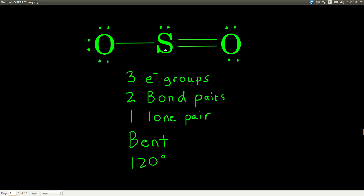For sulfur dioxide, there are three electron groups: two are bond pairs and one is a lone pair. That means the molecular geometry is bent. The electron group arrangement is trigonal planar, but the molecular shape is bent, and the bond angle is 120 degrees.